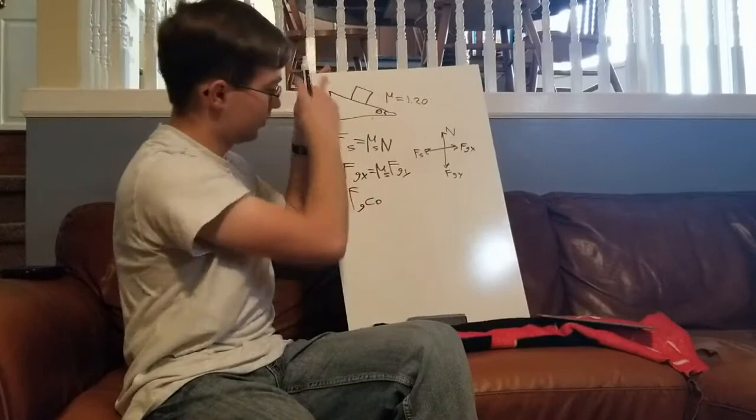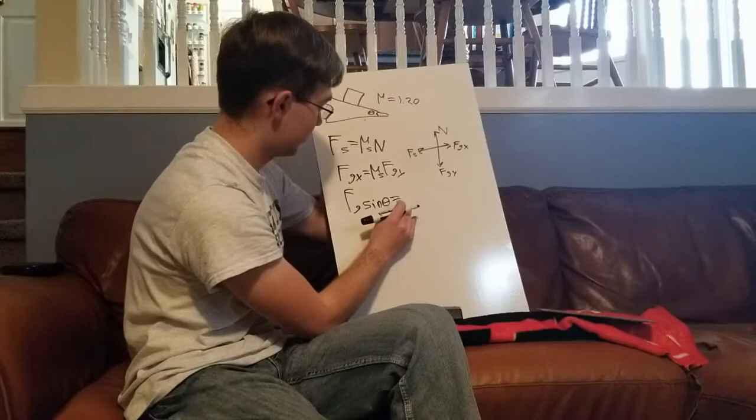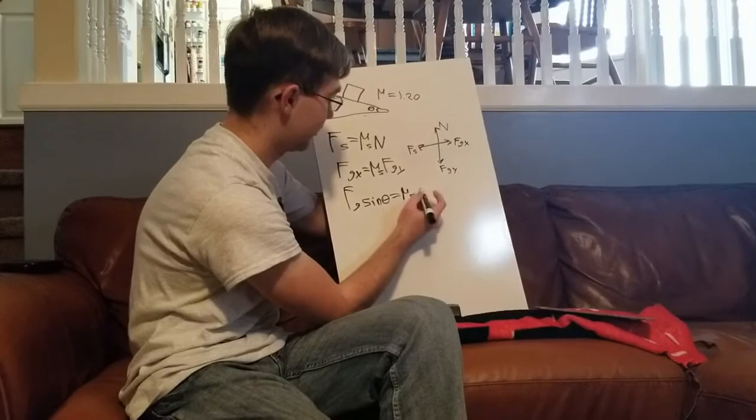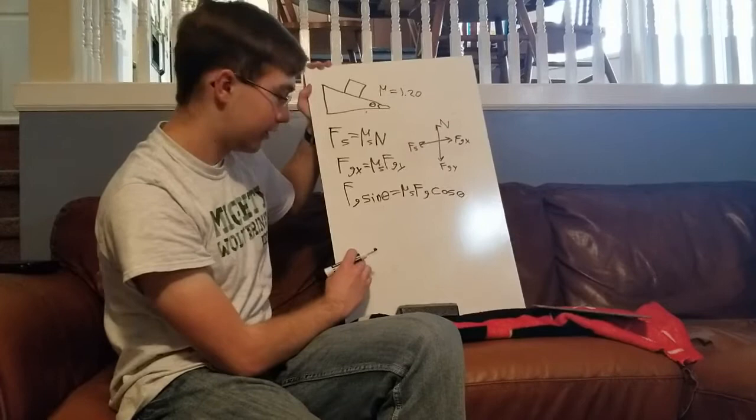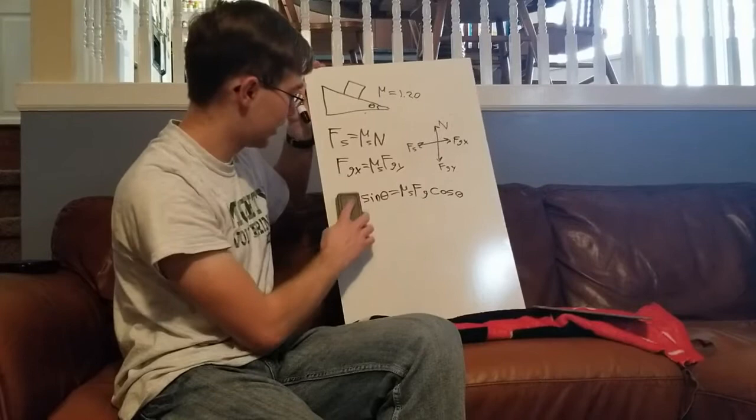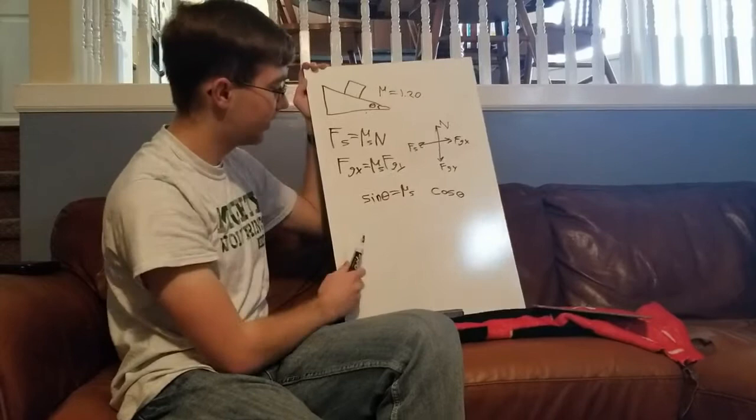No, it might be the sine. The sine of theta equals constant of static friction times the force of gravity cosine of theta. Now, I know everything. Actually first since force of gravity is on both sides those cancel out giving me sine of theta equals the coefficient of static friction times the cosine of theta and so the only thing I don't know is the theta and that's what I'm going to solve for.